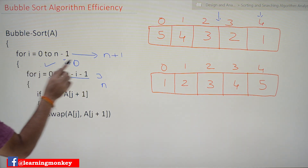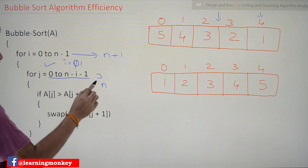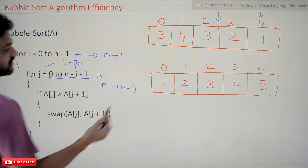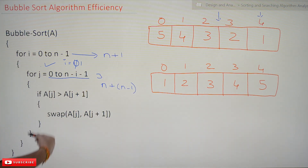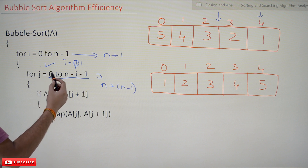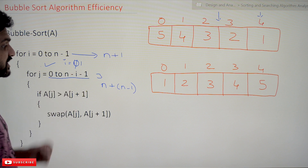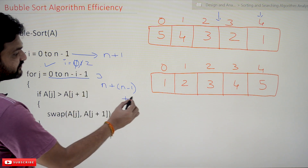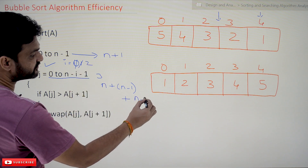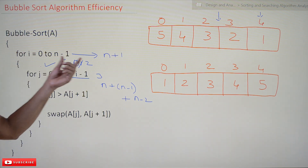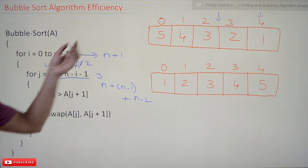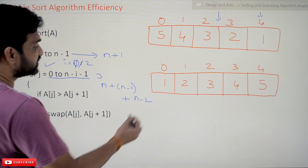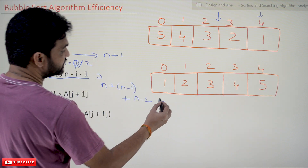When the value of i is equal to 1, this inner for loop is going to iterate n minus 1 number of times. When i equals 2, it iterates n minus 2 times. And when i equals 4 — the last iteration — this inner loop is going to iterate just one time.